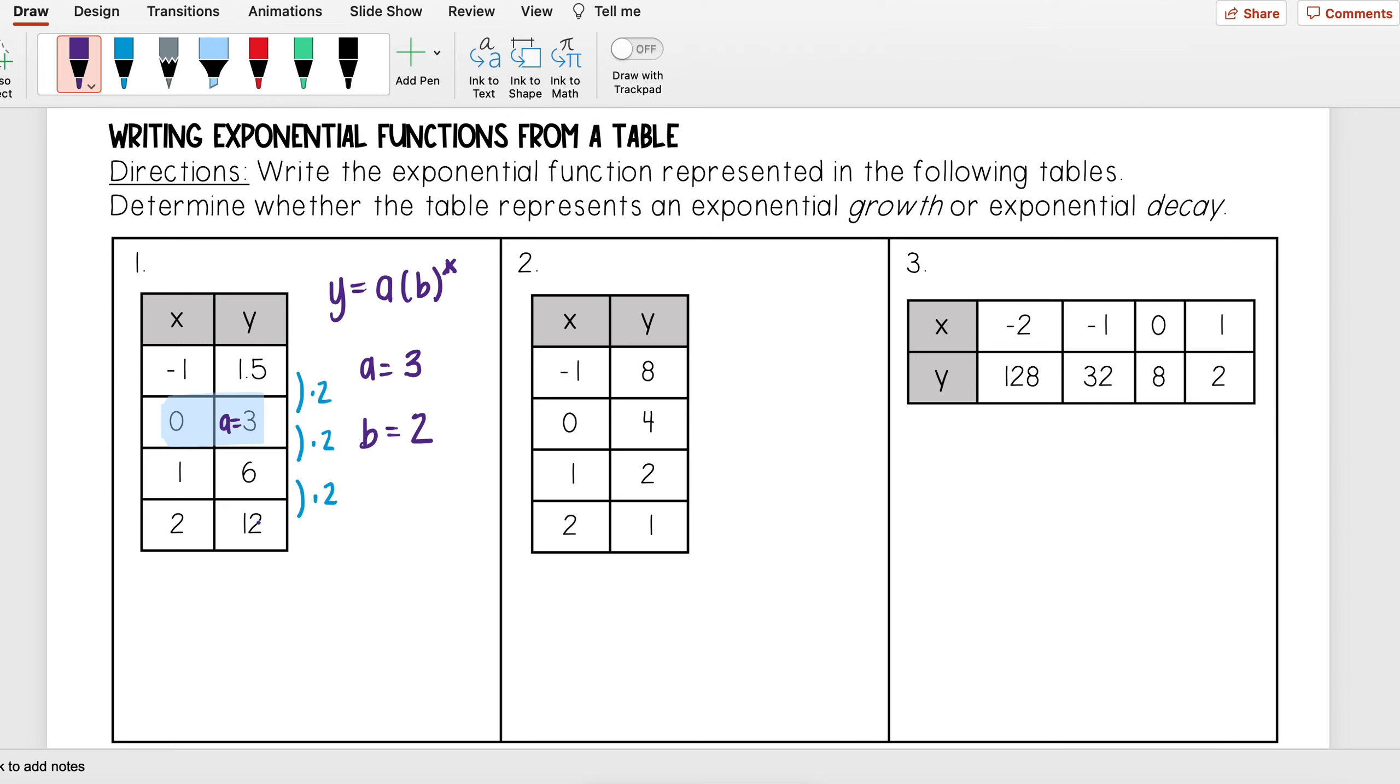From 1.5 to three I multiply by two, so that means that my b value is two. If you don't notice it right away, which is okay, another way that you can do it is just to take the second number and divide it by the first.